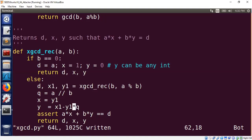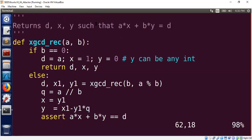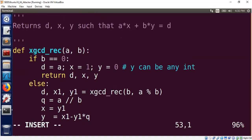So here's the recursive algorithm. I'll zoom in a little bit. So the algorithm takes A and B as inputs and computes X and Y and D which satisfies this property: A times X plus B times Y is D. What is D? D is nothing but GCD of A comma B.